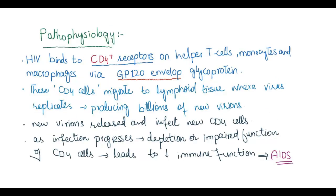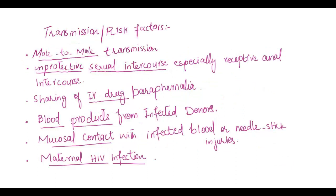Pathophysiology: HIV binds to CD4 receptors on helper T cells, monocytes, and macrophages via GP120 envelope glycoprotein. These CD4 cells migrate to lymphoid tissue where the virus replicates, producing billions of new virions. New virions are released and infect new CD4 cells. As infection progresses, depletion or impaired function of CD4 cells leads to decreased immune function, which leads to AIDS.